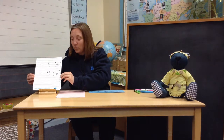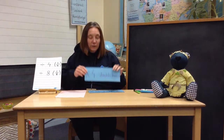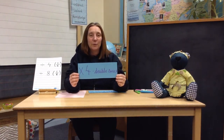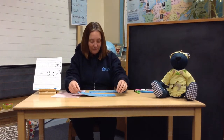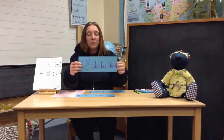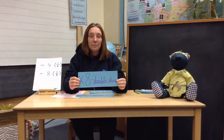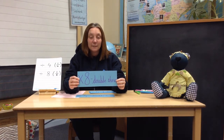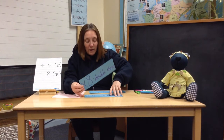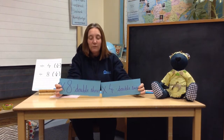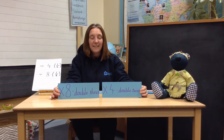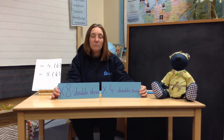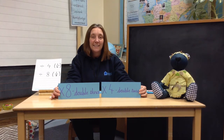In our last lesson, we learned how to multiply by four by doubling twice, and how to multiply by eight by doubling thrice. I wonder whether you can predict: if you know how to do these two calculations, do you think you might be able to predict how you would do the inverse — how you would divide by four and divide by eight?